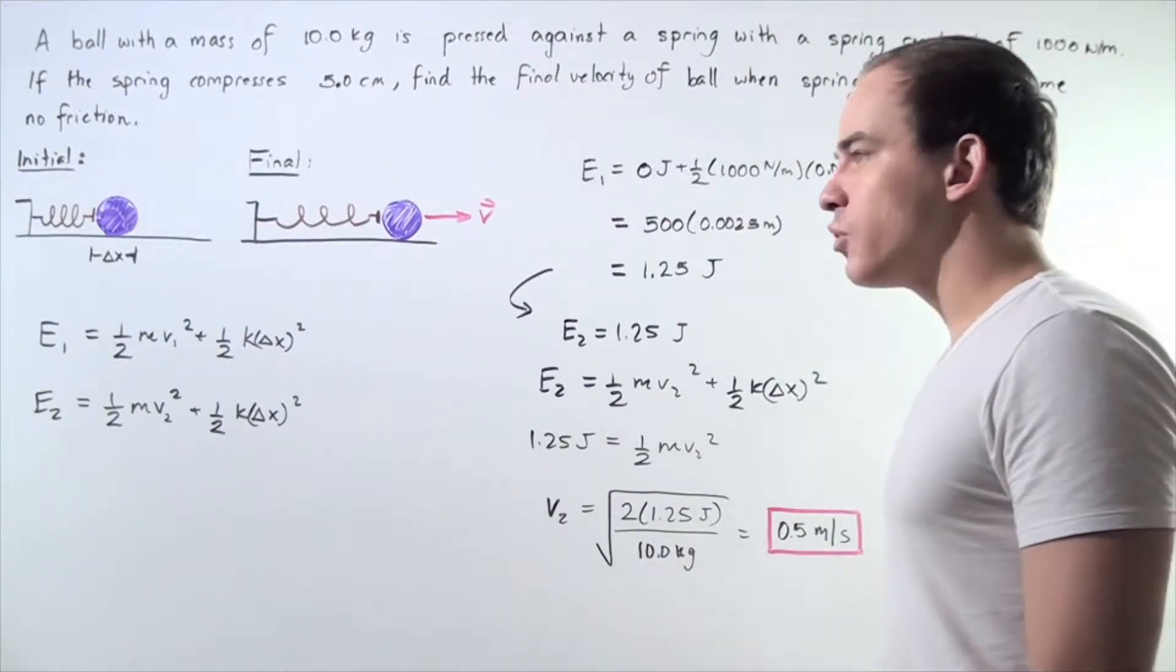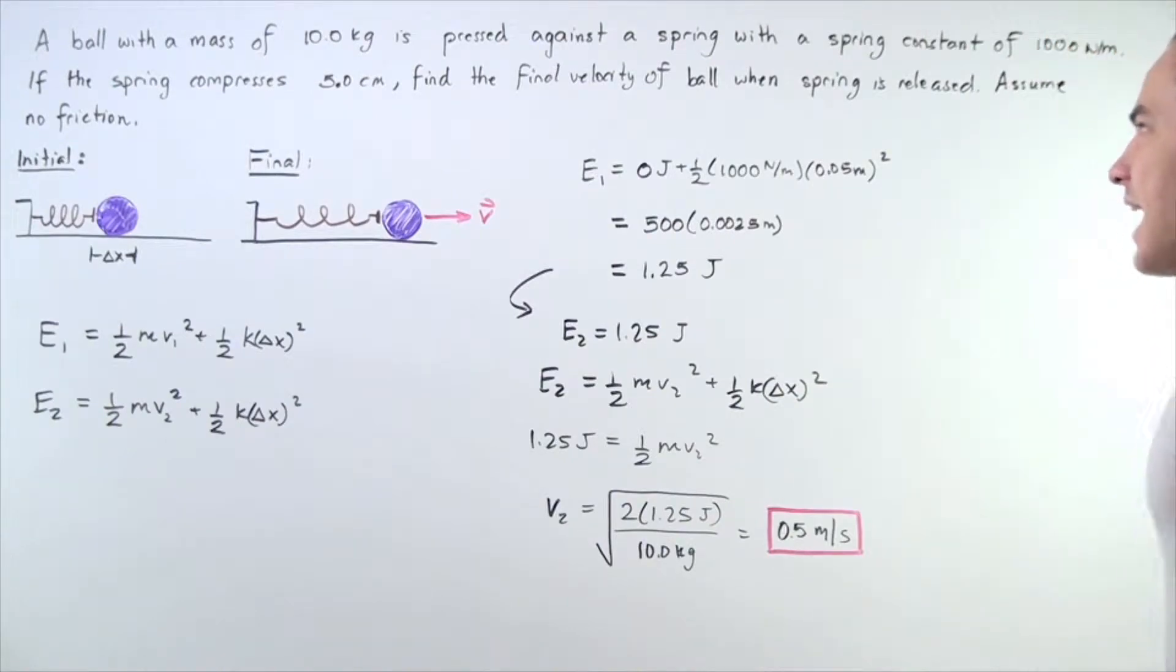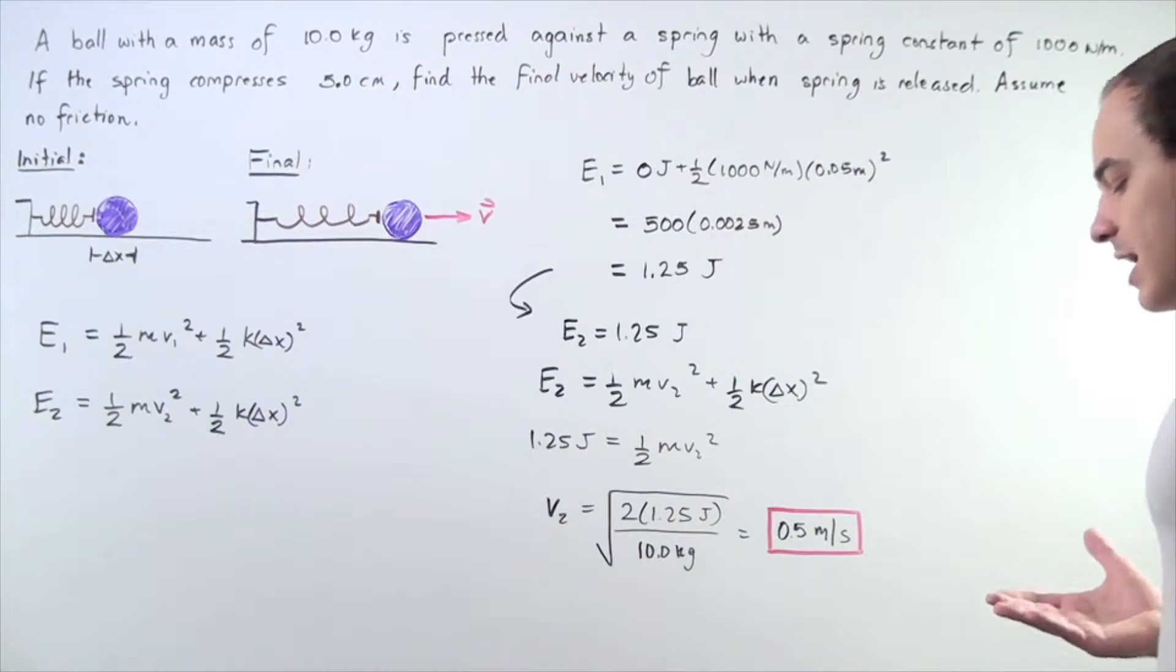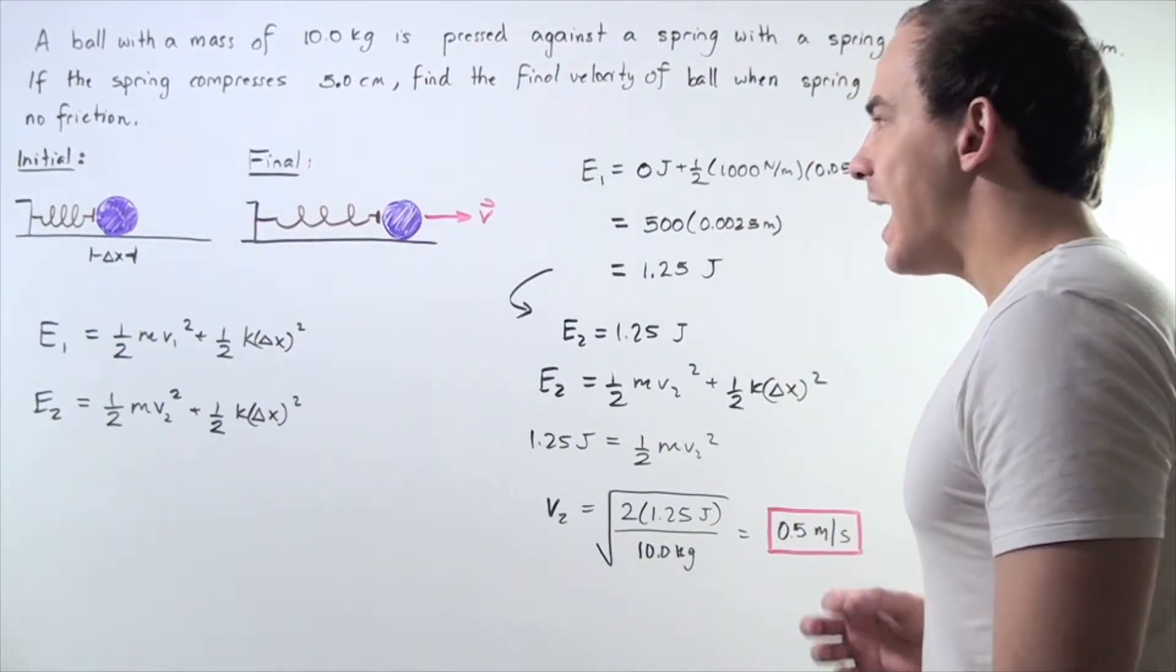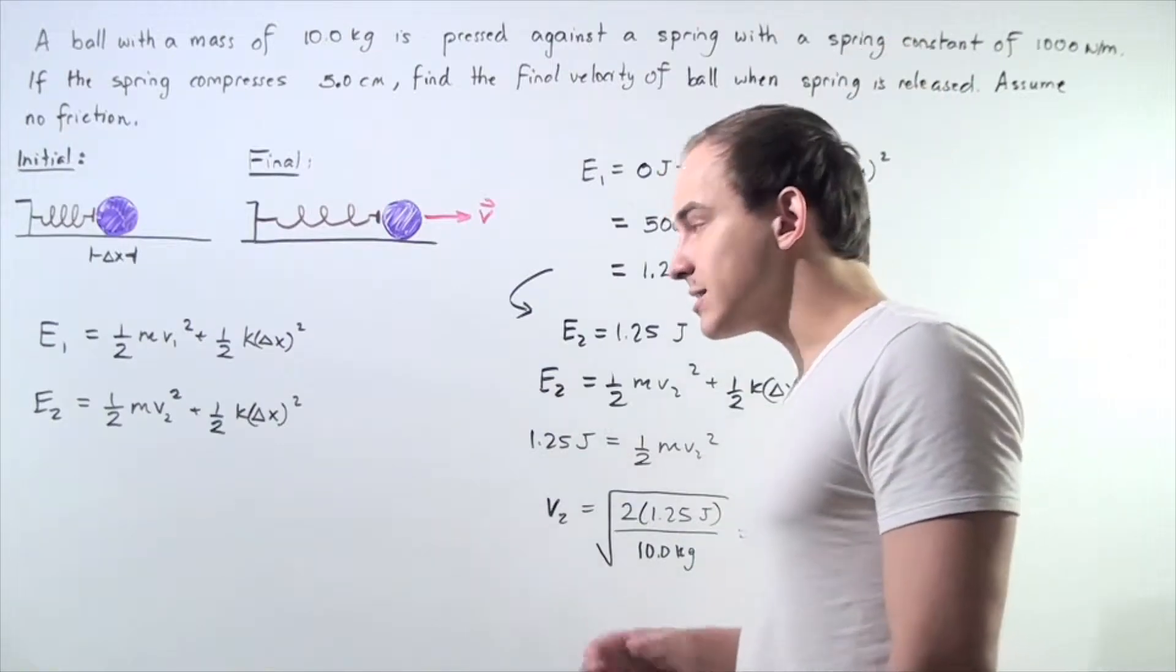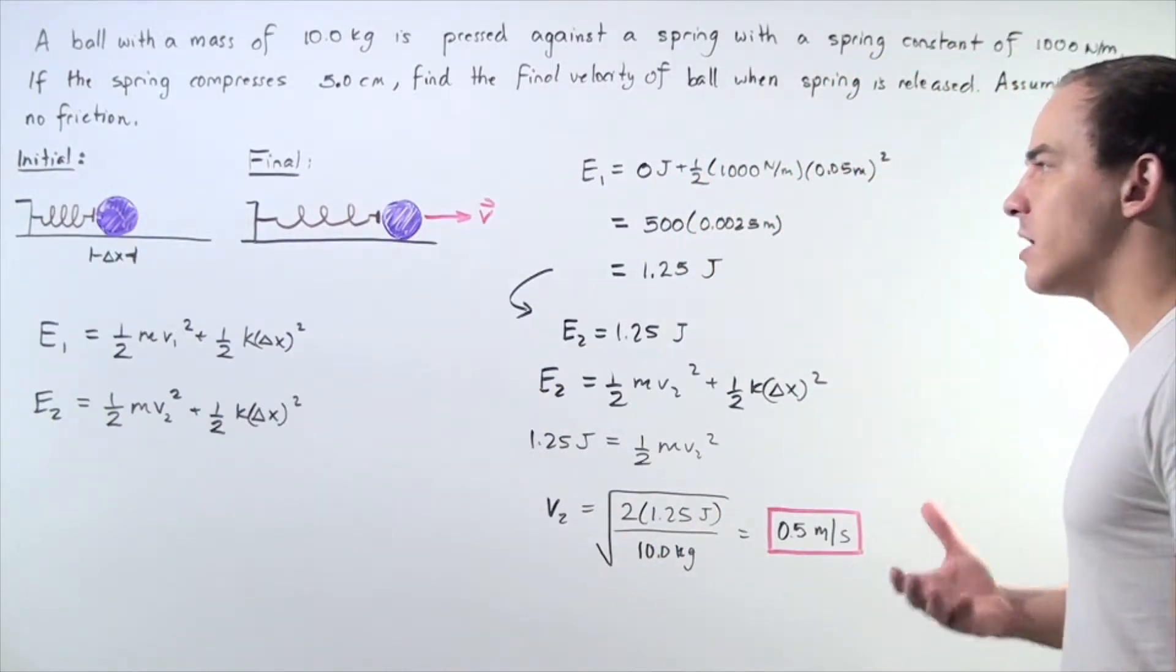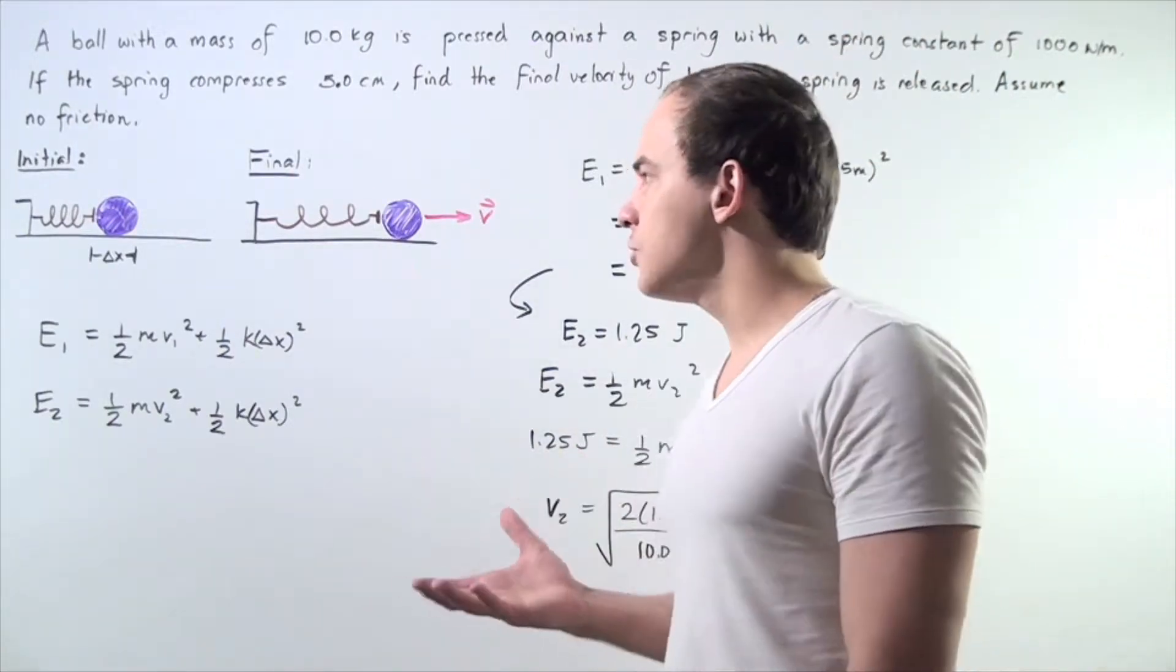Now if the spring compresses a distance of 5 centimeters, we want to calculate the final velocity of the ball when the spring is released. Let's make the assumption that we have no friction and the spring is massless. So that means only conservative forces are acting on our object and so we have the conservation of mechanical energy.